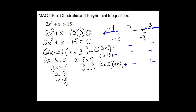For your endpoints, look back at your inequality — there is no equals sign underneath, so you are going to use parentheses in the direction of your shading. In interval notation, our answer is: negative infinity to negative 3, parenthesis, union, 5 halves to infinity.